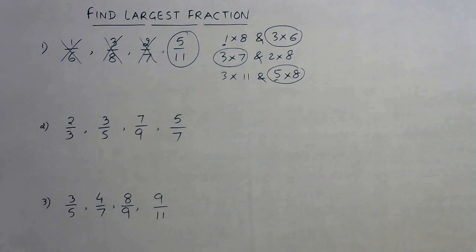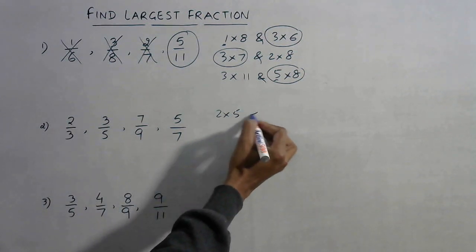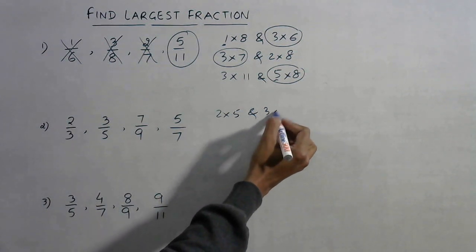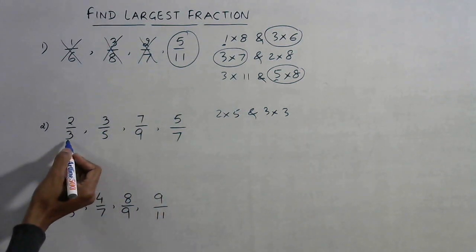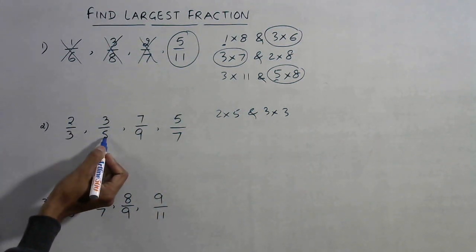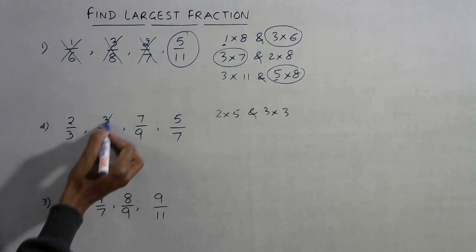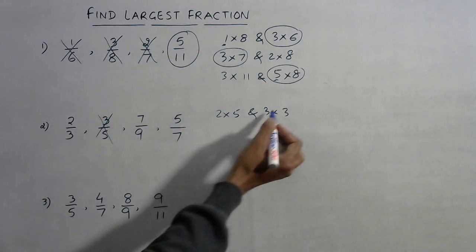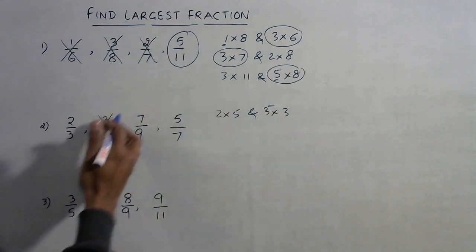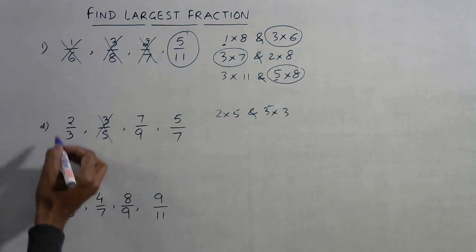Let's take one more question. Cross multiply the first two: 2 into 5 is 10, and 3 into 3 is 9. The numerator giving the smaller product is discarded, so 3/5 is discarded and 2/3 is retained.